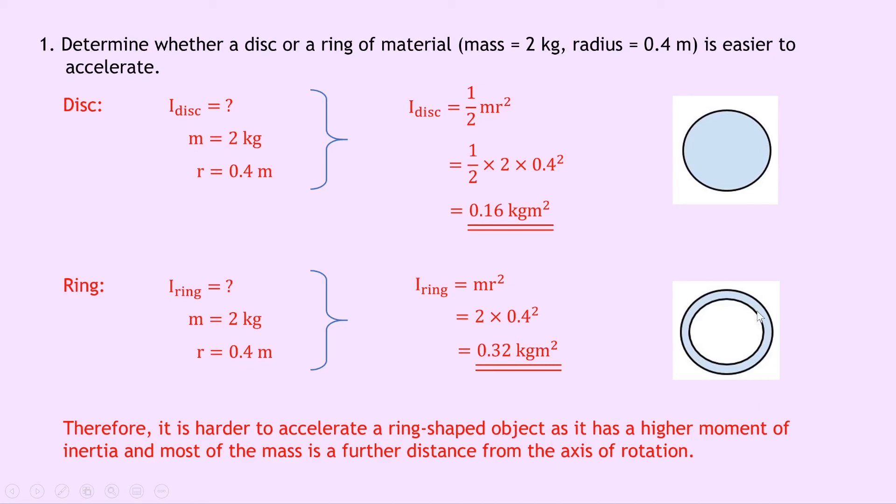And you can see that in the picture that most of its mass is a further distance from the axis of rotation in the middle compared to the disc where all of the mass was spread evenly over the surface.